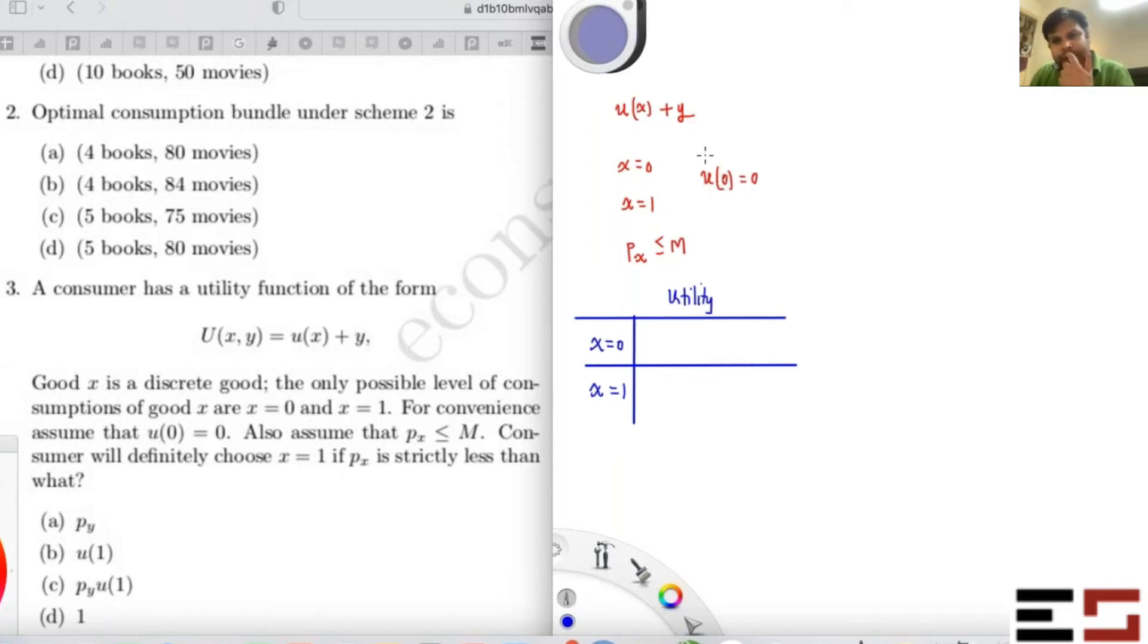Well, if you choose 0 units of X your utility will be u(0) plus Y. And so income is M, and P_Y is the price of Y. So basically what you're going to get is M by P_Y. Right? Because u(0) is 0 and you'll spend all your money on Y. You can buy M by P_Y units of Y.